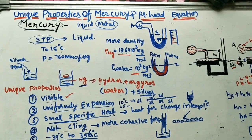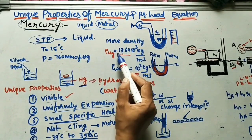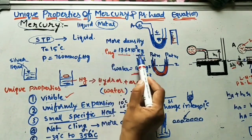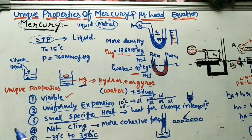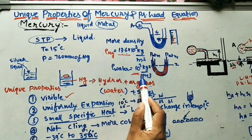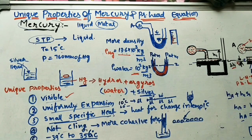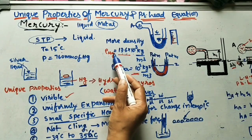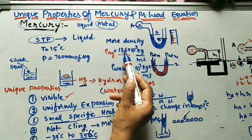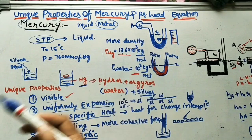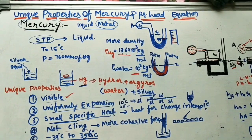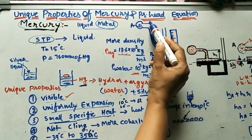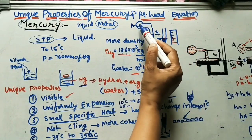The density of mercury (Hg) is 13.6 × 10³ kg/m³, whereas water is 10³ kg/m³. So mercury is 13.6 times more dense than water.